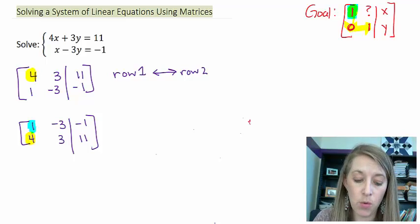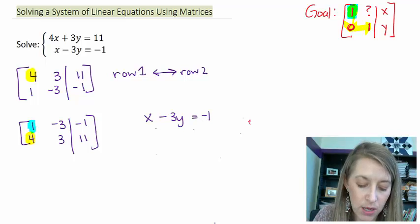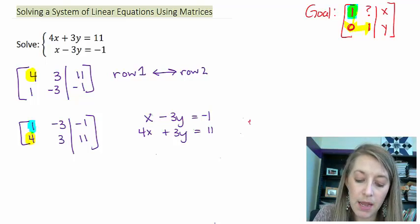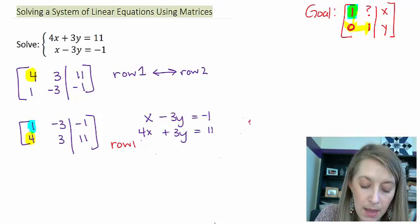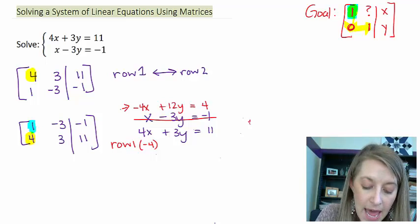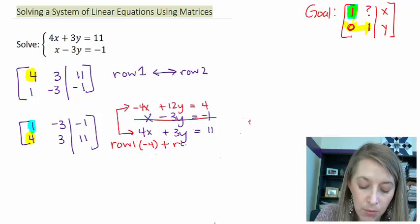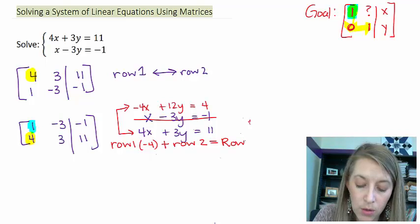So if this was a system of equations, I would have a 1x minus 3y is equal to negative 1, and 4x plus 3y is equal to 11. Well, to eliminate my x values, I would multiply my row 1 by negative 4. So that's what I'm going to do is I'm going to take my row 1 and I'm going to multiply it by negative 4. So when I do that, that gives me a negative 4x plus 12y is equal to positive 4. And then I add these two rows. So I add my row 2.